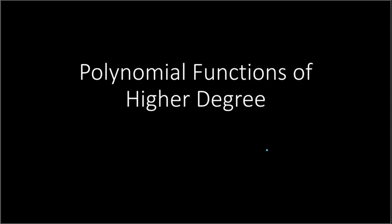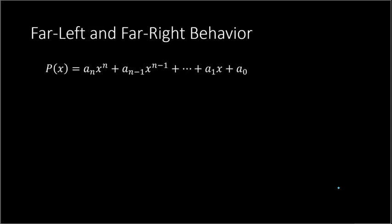Let's begin by talking about the far left and the far right behavior. The far left and the far right of each graph is going to do something a little bit different. In general, let's say we have a polynomial — we'll call it p of x — and then we have our coefficients, where we have a sub n, a sub n minus 1, etc., all the way to the end where we have our constant term.